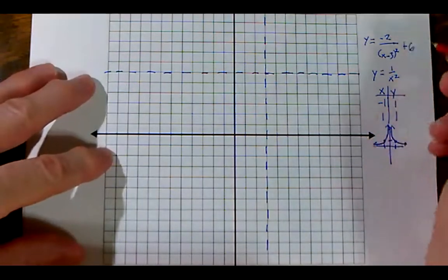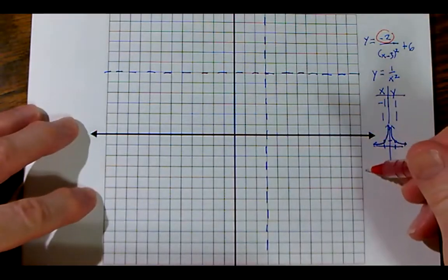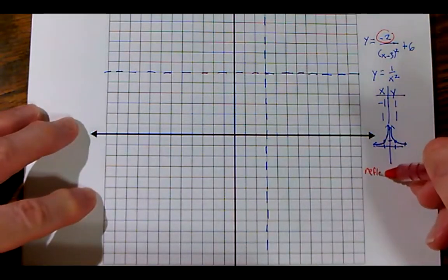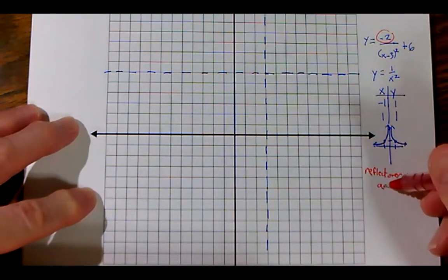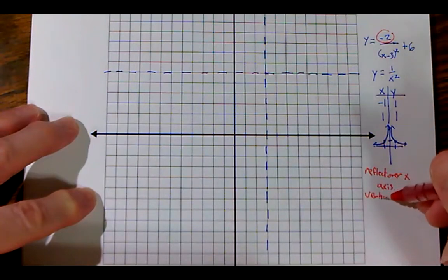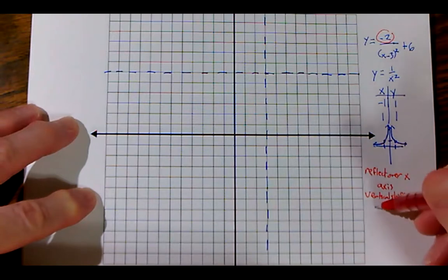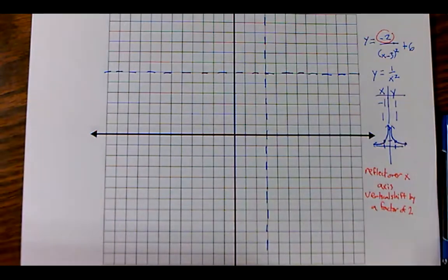Now there's more to it than that. I have to focus on what this negative two would do. That's a negative two multiplied by your function. The negative indicates that we're going to reflect over the x-axis. We'll think about what that means. And we also have a vertical shift because of the two by a factor of two. So that's all what's going on in that graph.